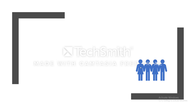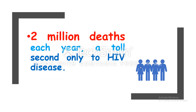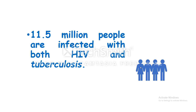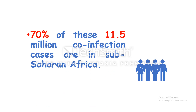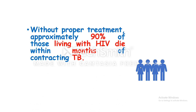There are 2 million deaths each year. Tuberculosis is second only to HIV disease. 11.5 million people are infected with both HIV and tuberculosis, and 70% of these co-infection cases are in sub-Saharan Africa. Without proper treatment, approximately 90% of those living with HIV die within a month of contracting tuberculosis.